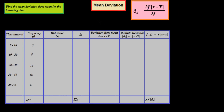In this session we will see the numerical based on mean deviation through mean of grouped data. Find the mean deviation from mean for the following data. The class intervals given are 0–10, 10–20, 20–30, 30–40, 40–50, and the corresponding frequencies are 5, 8, 15, 16, and 6.